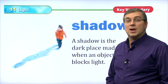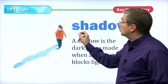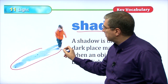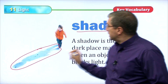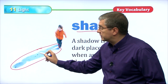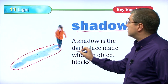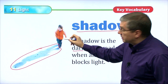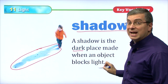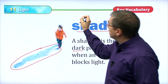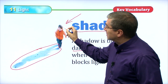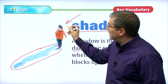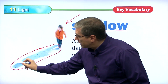So light and dark. Next we have shadow. What is a shadow? We can see a good picture here. This is the shadow of the boy right here. So a shadow is the dark place. This is dark, this is light. The shadow is the dark place made when an object — this boy is an object — blocks light. So he's blocking the light. The light is coming in this direction. It hits the boy and stays on his head. It doesn't go through his head. His head is blocking it.